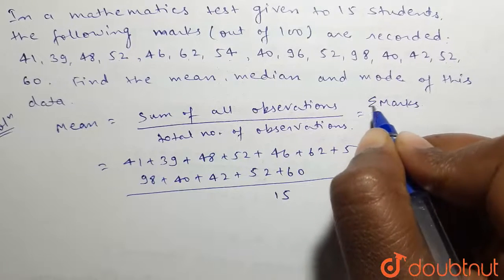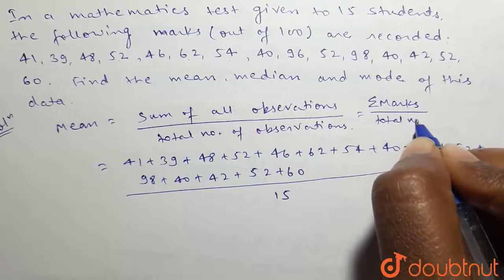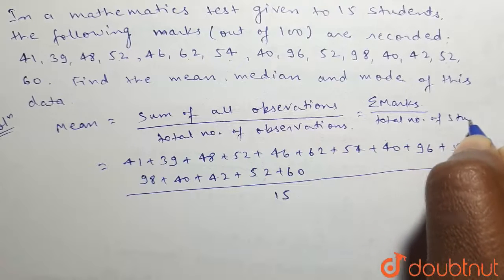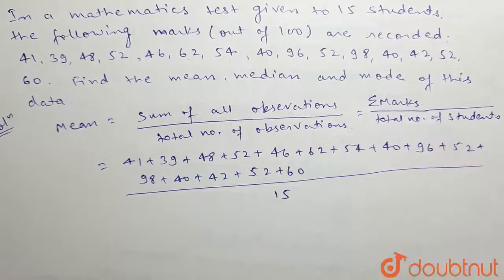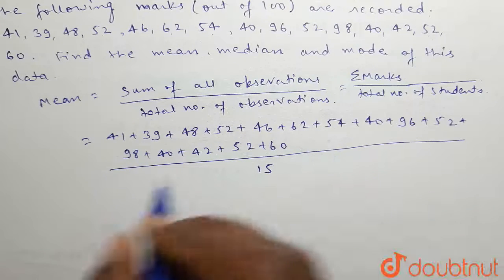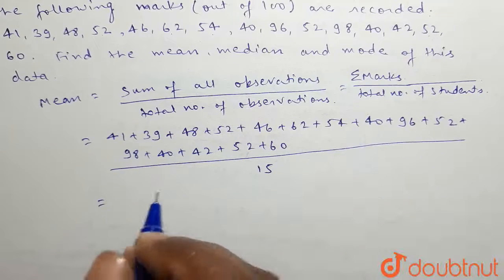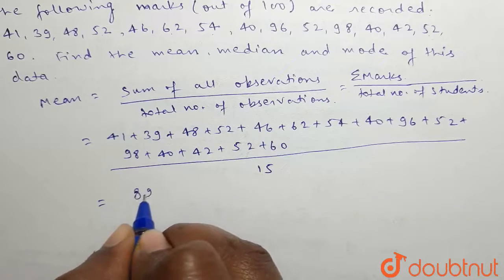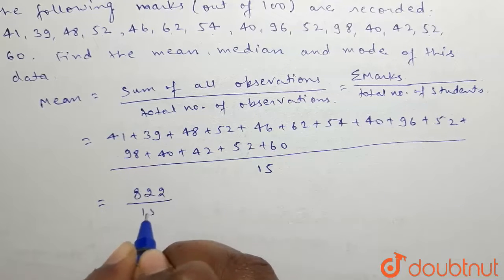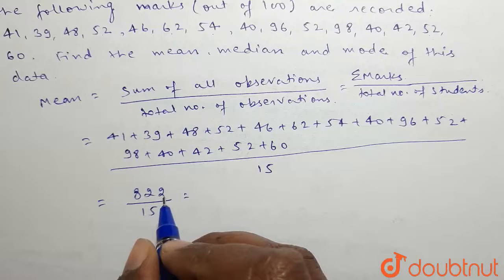This is summation of marks divided by total number of students. After adding all these values, we get the sum as 822 divided by 15.